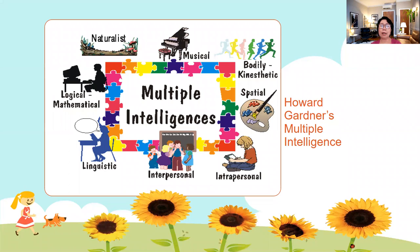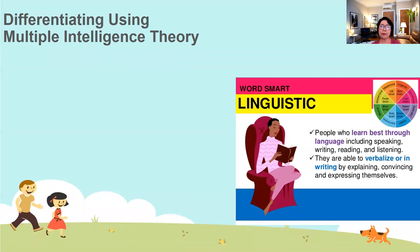When we talk about differentiated instruction, it reminds us of the theory presented by Howard Gardner in the early 90s — the Multiple Intelligence Theory. According to Gardner, students have different areas of interest or intelligence. These include musical, bodily-kinesthetic, spatial, interpersonal, intrapersonal, linguistic, logical-mathematical, and naturalist intelligences.